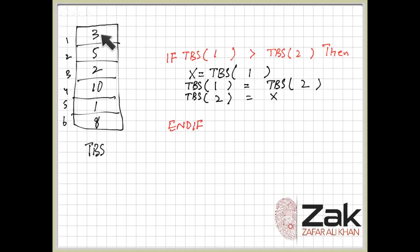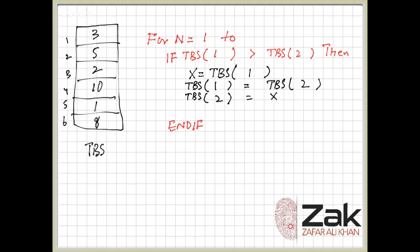We have to keep checking from here until the end of the array. The loop should run from 1 to 5 — not 6 — because if we go to 6, it would be compared with a 7th position that doesn't exist. So we write: for n equals 1 to 5, if toBeSorted[n] is greater than toBeSorted[n+1], then swap them — toBeSorted[1] becomes toBeSorted[n].